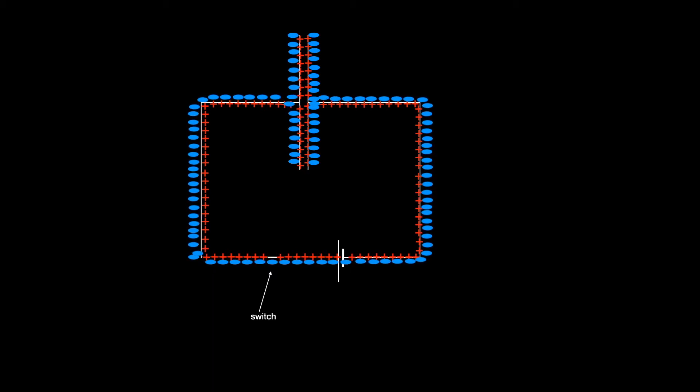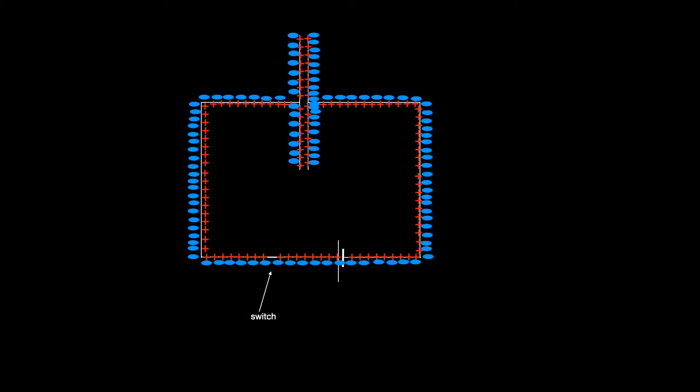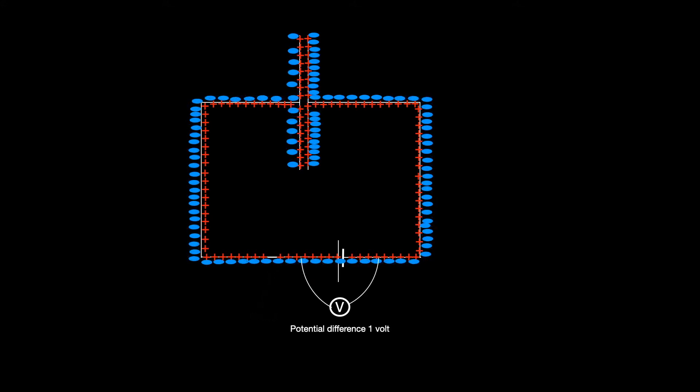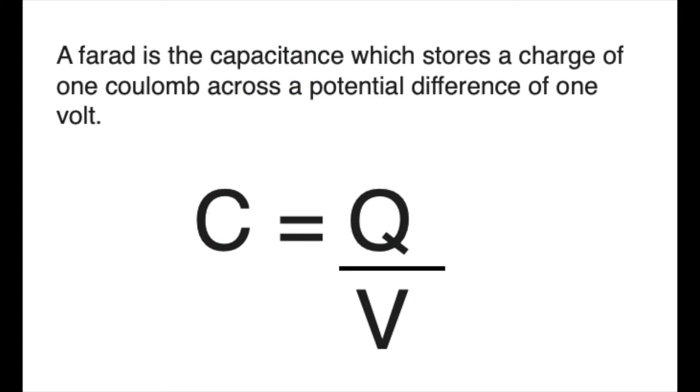And let us suppose further that the cell has a potential difference across the terminals of one volt. If this one volt cell managed to push a charge of one coulomb around the circuit to store on the plates, then that would have a capacitance of one farad.